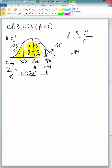In this case, we know the 1.44. We do know X is 450, this value right here. We do know mu is 400 right here, but we don't know standard deviation.